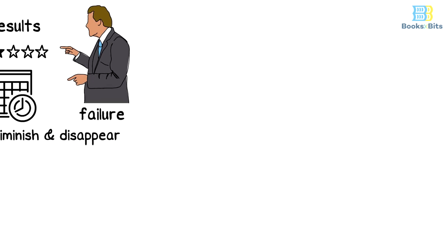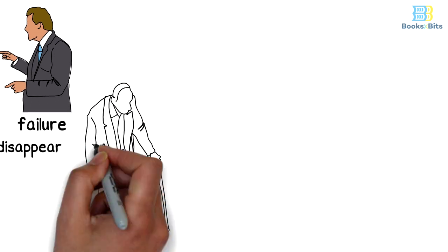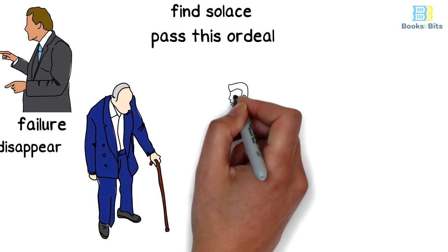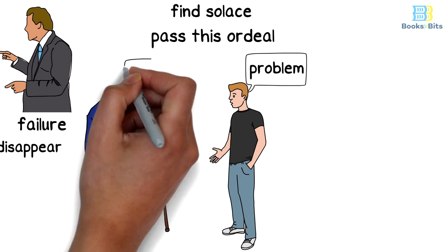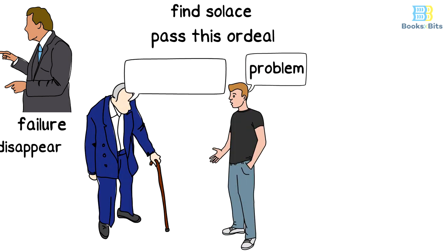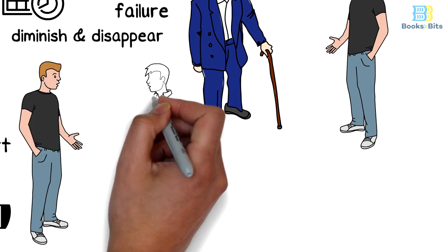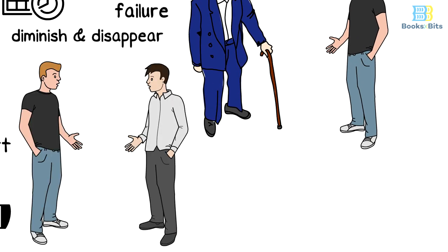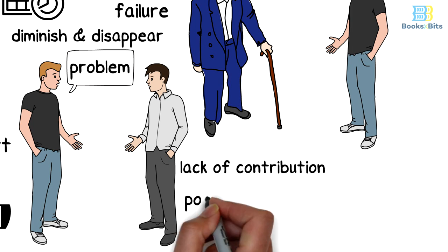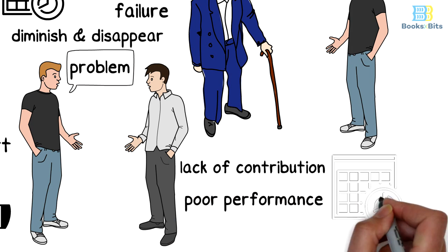So he decided to go to the old man, hoping that he would find solace or anything that may enable him to pass this ordeal. When he met the old man, he told him about his problem and the old man concluded that the main problem is that the young man hates confrontation. He didn't face his colleague at work and speak with him directly and honestly about the problem. His lack of contribution to the project leads to poor performance and delayed completion.